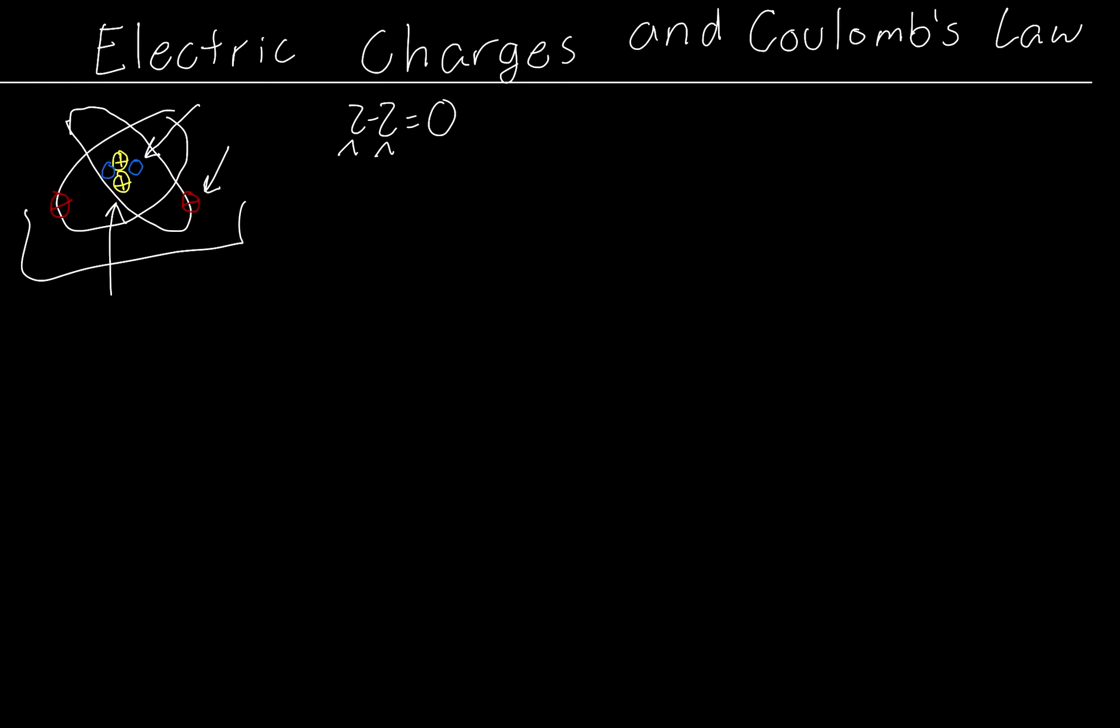this being the protons and this being the electrons, and that results in a net charge of zero. So that means the atom is of neutral charge or that it doesn't have either a positive or a negative charge. Now, let's talk about static electricity. Static electricity occurs when an object obtains either a positive or negative charge, which creates an imbalance and makes the atom want to go back to being neutral.